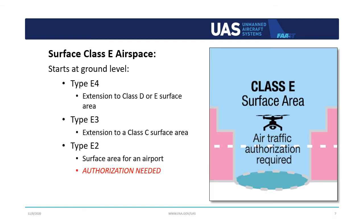Simply put, it's Class Echo airspace that extends down to the surface instead of the common 700 or 1200 feet above ground level. This category of airspace exists to add additional protection to arriving and departing aircraft. Because of this, certain portions of Surface Class Echo airspace require authorizations prior to flight.